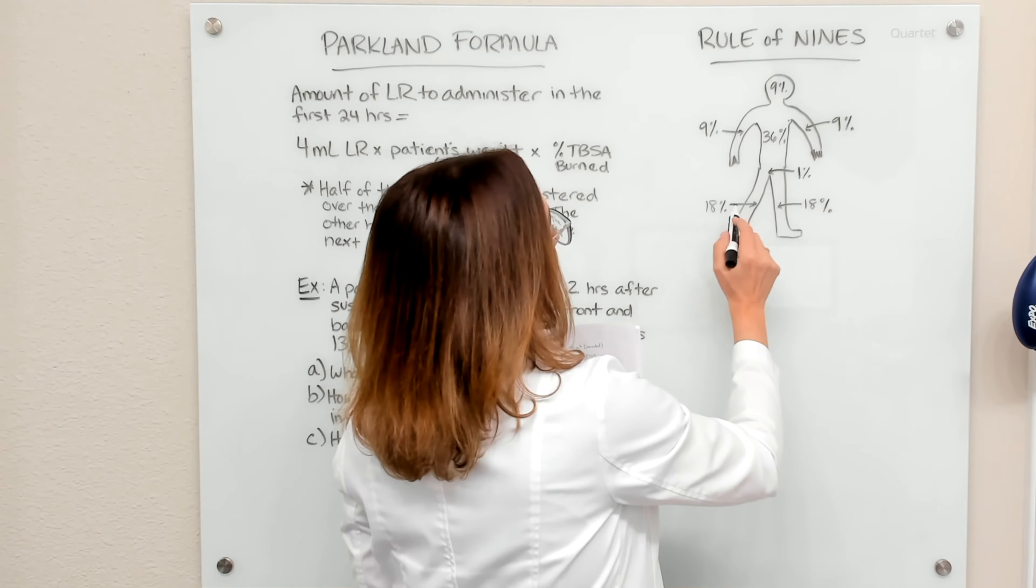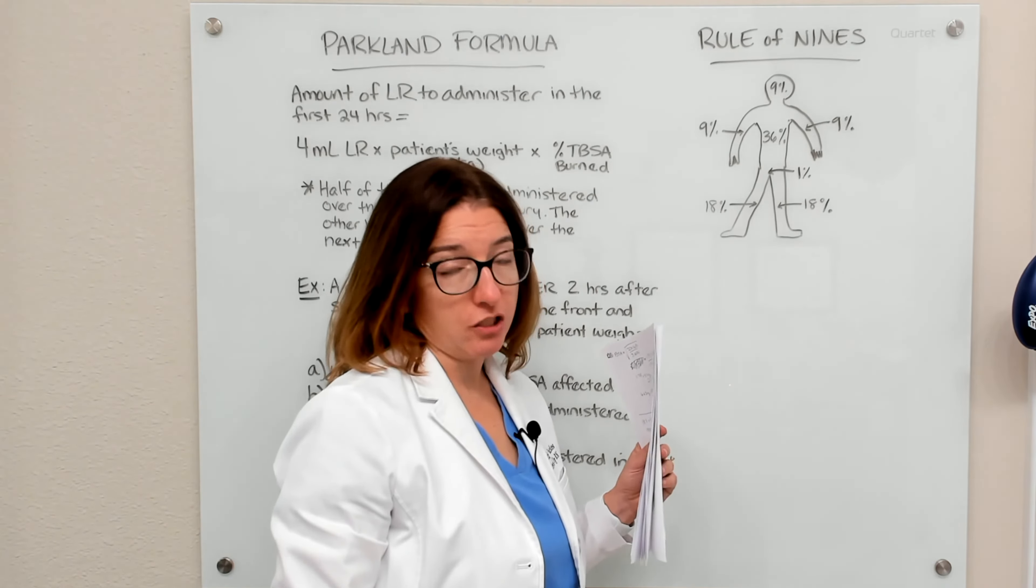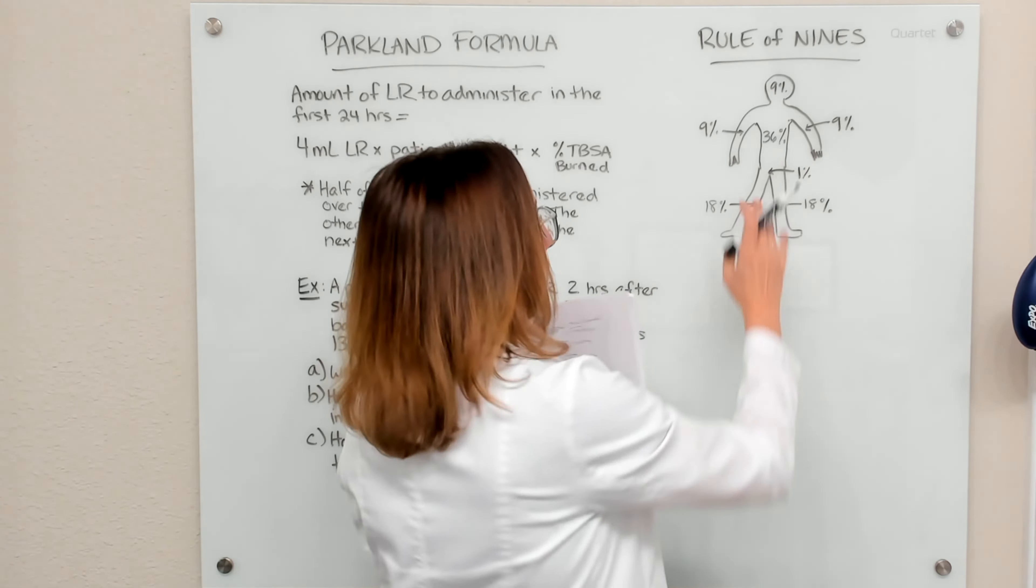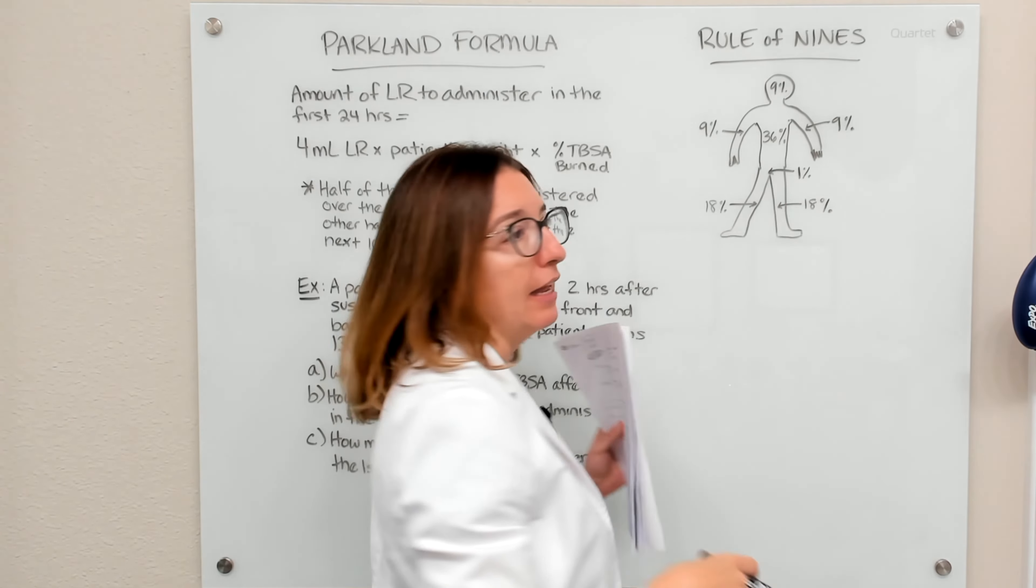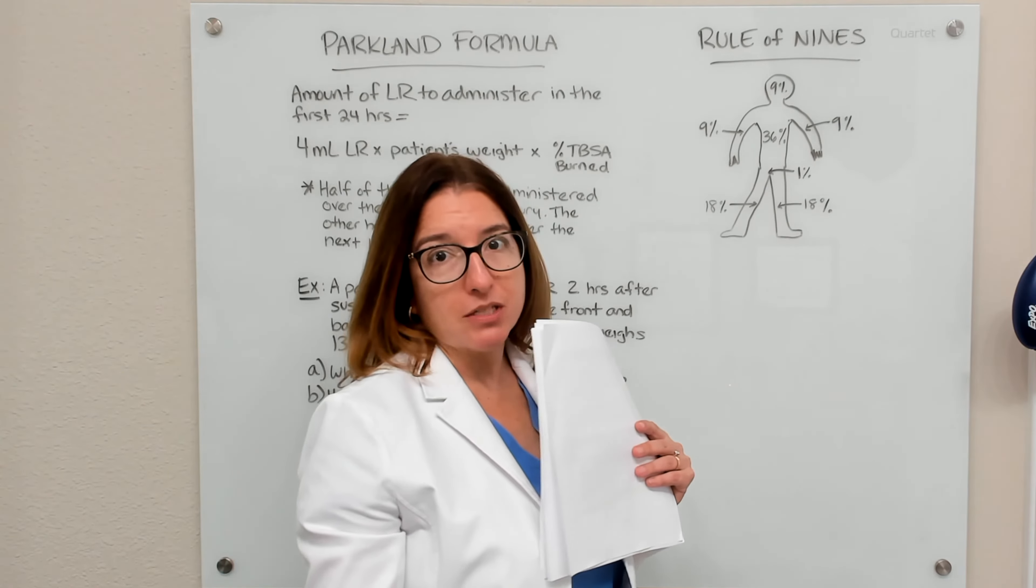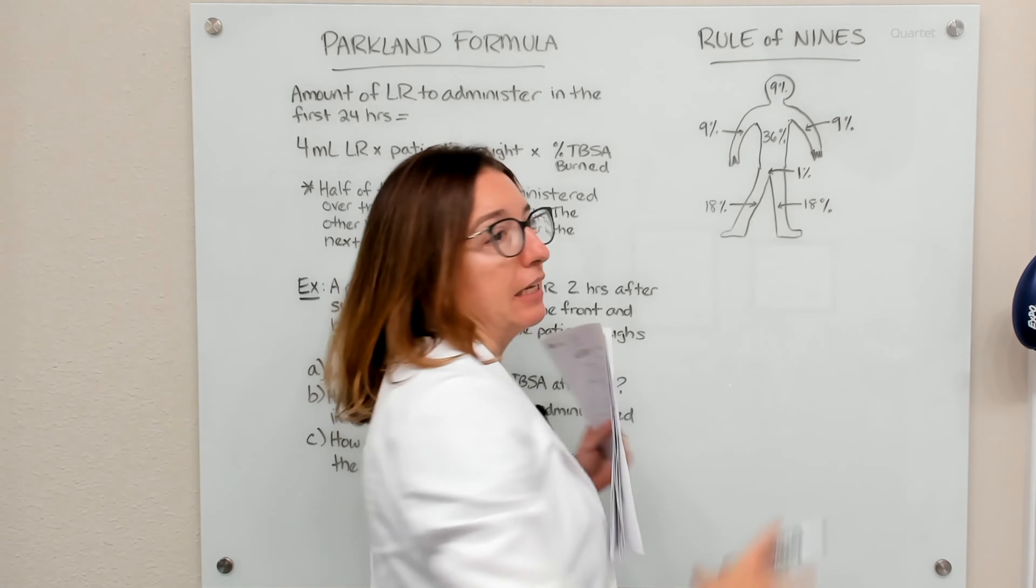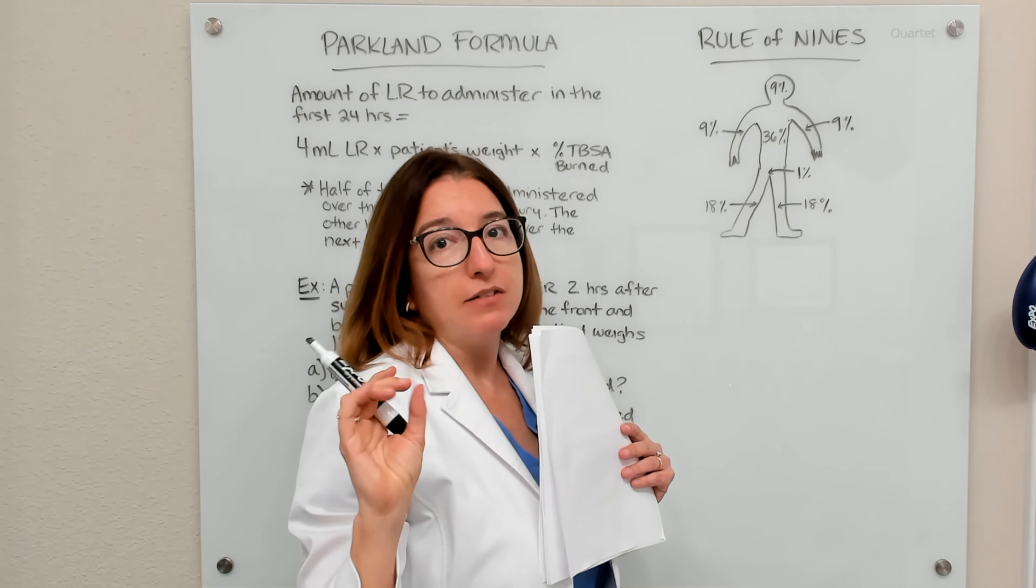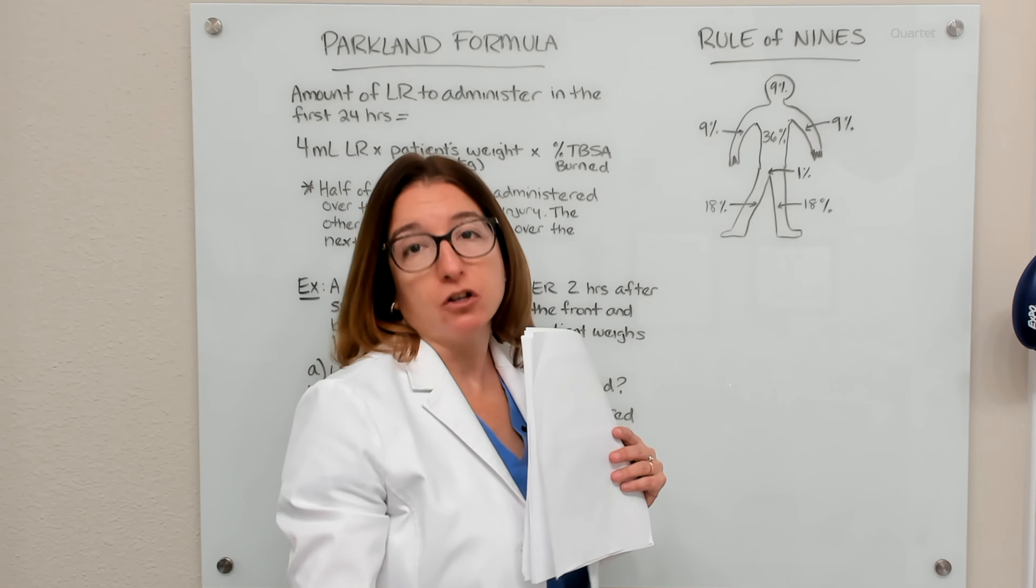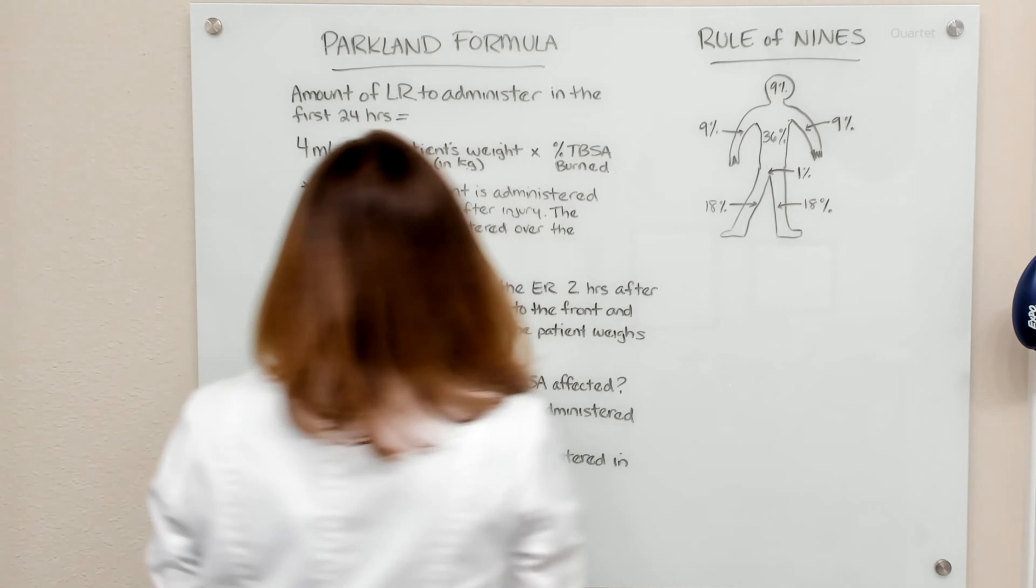And then each leg, if the entire leg is burned, that is 18 percent. If it is just the front of one leg, that is 9 percent. So you definitely need to keep this in mind when calculating the percent of TBSA, total body surface area affected by the burn.